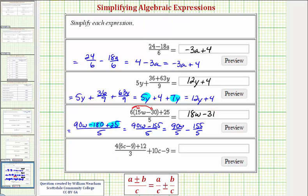Our last example is very similar. We first want to simplify the numerator here. So we'll distribute 4. 4 times 6c is 24c. And then 4 times negative 9 is negative 36, so minus 36. And we still have plus 12. All this is divided by 3. And we have plus 10c minus 9.